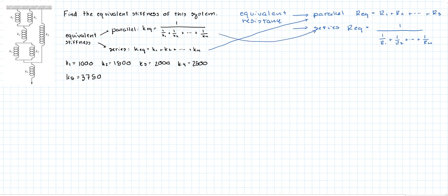Okay, so let's get to it. We're going to start by combining these two since they're in parallel. We'll say that k_11 is equal to 2·k_1, which is equal to 2000.